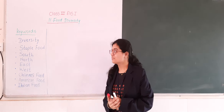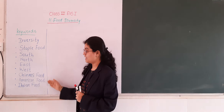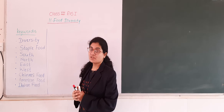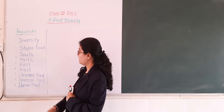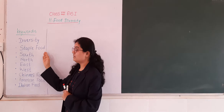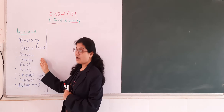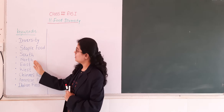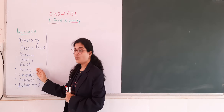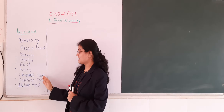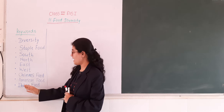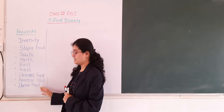First of all, you have to write down some keywords from the book. The keywords are: diversity, staple food, south, north, east, west, Chinese food, American food, and Italian food.